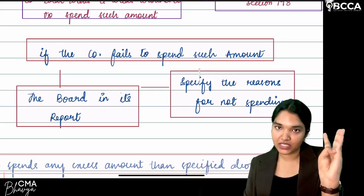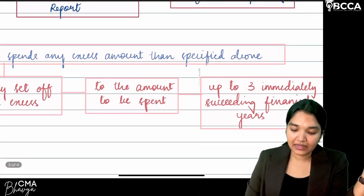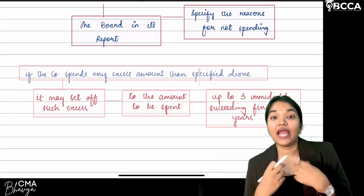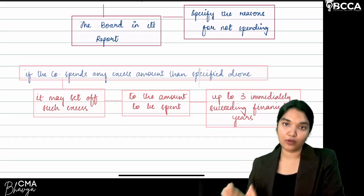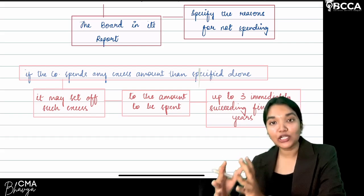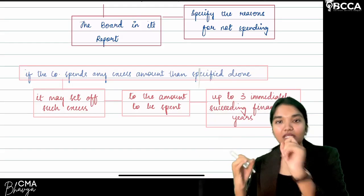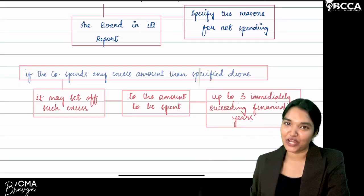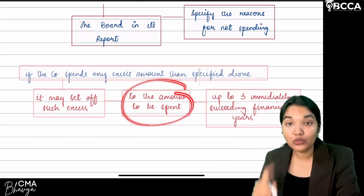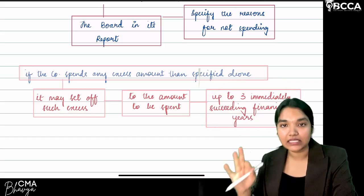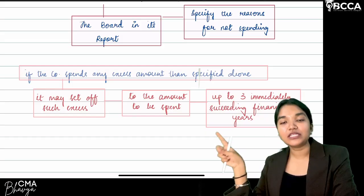To summarize board's report disclosures: composition of the CSR committee, the CSR policy, and reasons for not spending the minimum contribution amount. If in a financial year a company spends more than 2% — say 3% or 4% — that excess amount can be set off against the minimum contribution requirement for up to 3 immediately succeeding financial years.